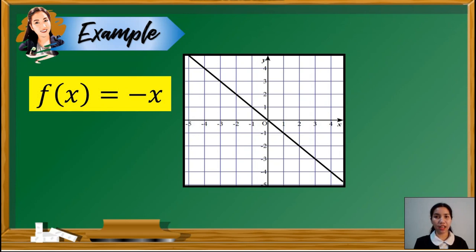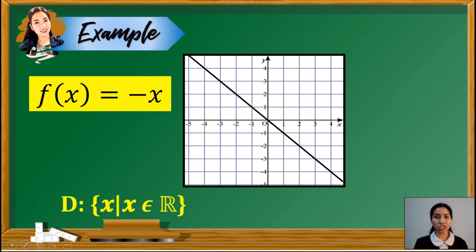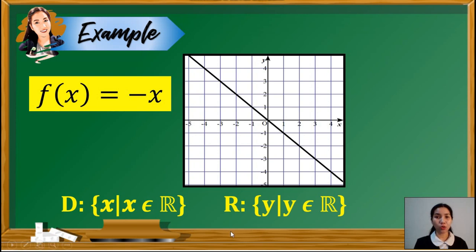We have an example: f(x) is equal to negative x. This is a linear function whose graph is shown at the right. Observe that the graph extends infinitely in both directions, left and right, so x can be any real number. This gives us a domain of the set of x such that x is an element of real numbers. Likewise, the range of this function is the set of y such that y is an element of real numbers. This domain and range are true for all linear functions.